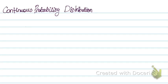Our next topic is continuous probability distribution. In S1, we learned about discrete random variables — variables that can take individual values each with a given probability. This could be, for example, a score on a fair cubic die.